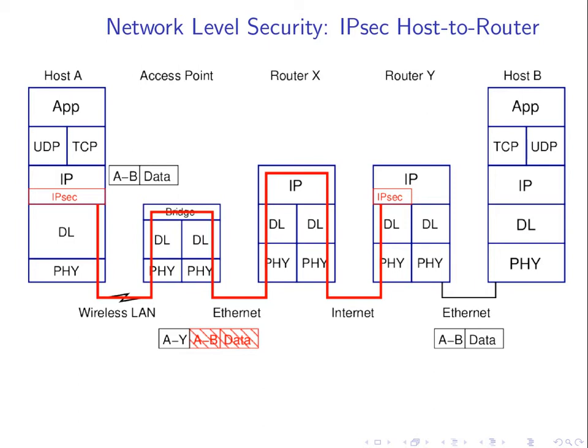With IP sec set up correctly, I access host B using its address. My application creates a packet with the source IP address as host A and the destination as host B — an IP datagram from A to B. What IP sec does in this setup is take that IP datagram and put it inside another IP datagram. The new outer datagram has a header where the source is still A but the destination is router Y.